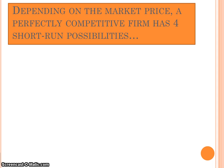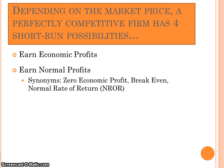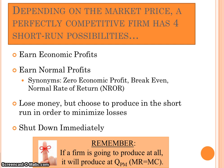Depending on the market price, a perfectly competitive firm has four short-run possibilities. The producer might earn economic profits — profit above and beyond a normal rate of return after considering all implicit costs. The producer may earn normal profits, which is a normal rate of return or zero economic profit. A producer may lose money but choose to produce in the short run to minimize losses. Or a producer may shut down immediately. If a firm is going to produce at all, it will produce at its profit-maximizing quantity where MR equals MC, or it produces nothing.